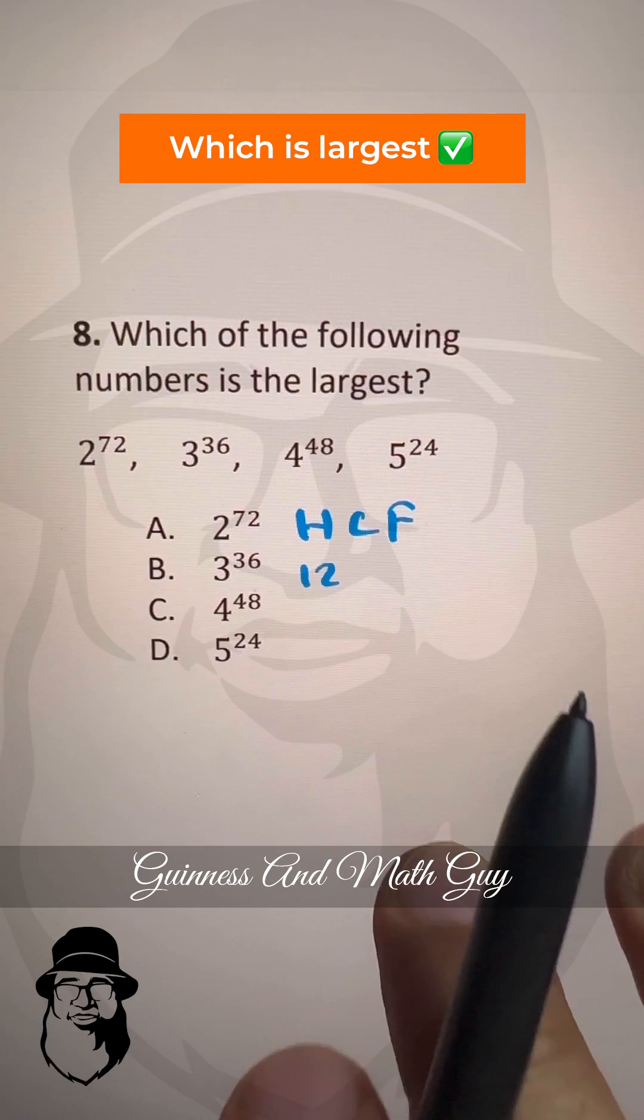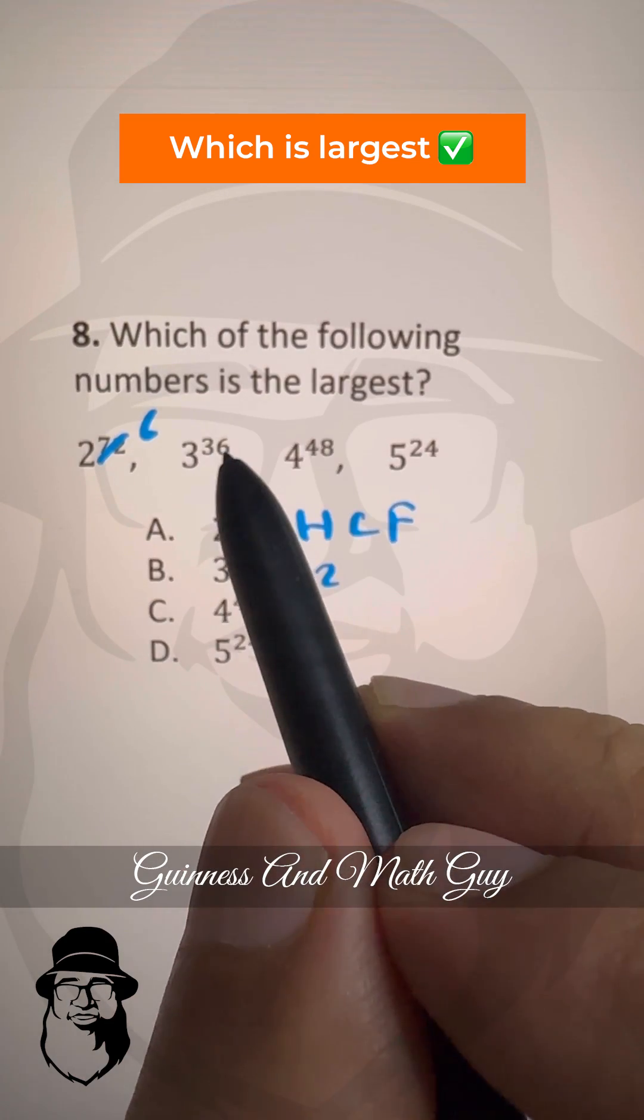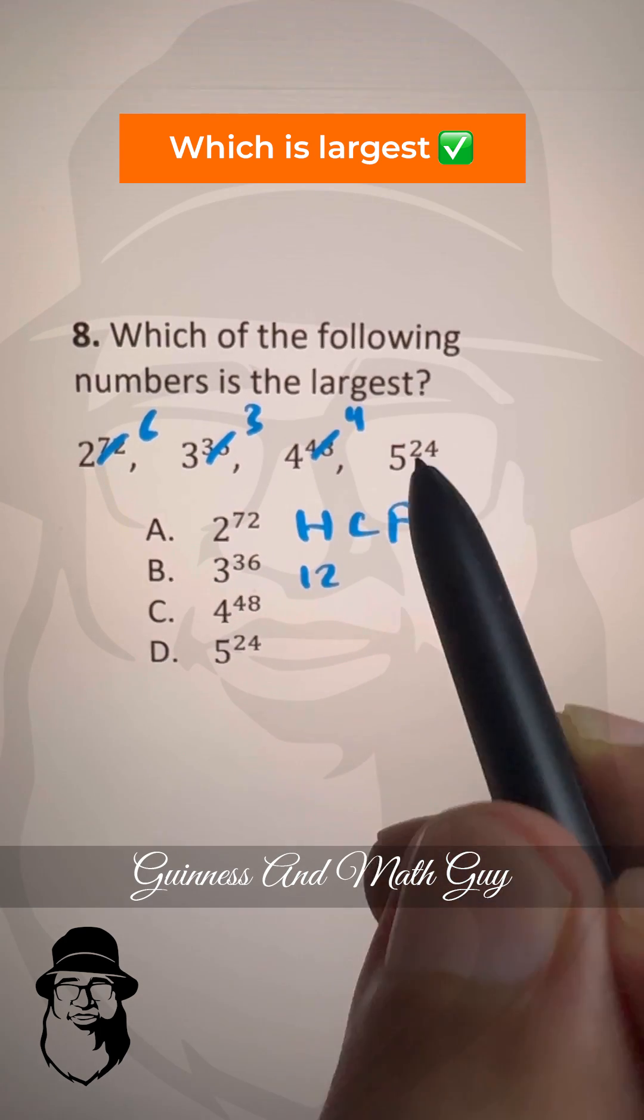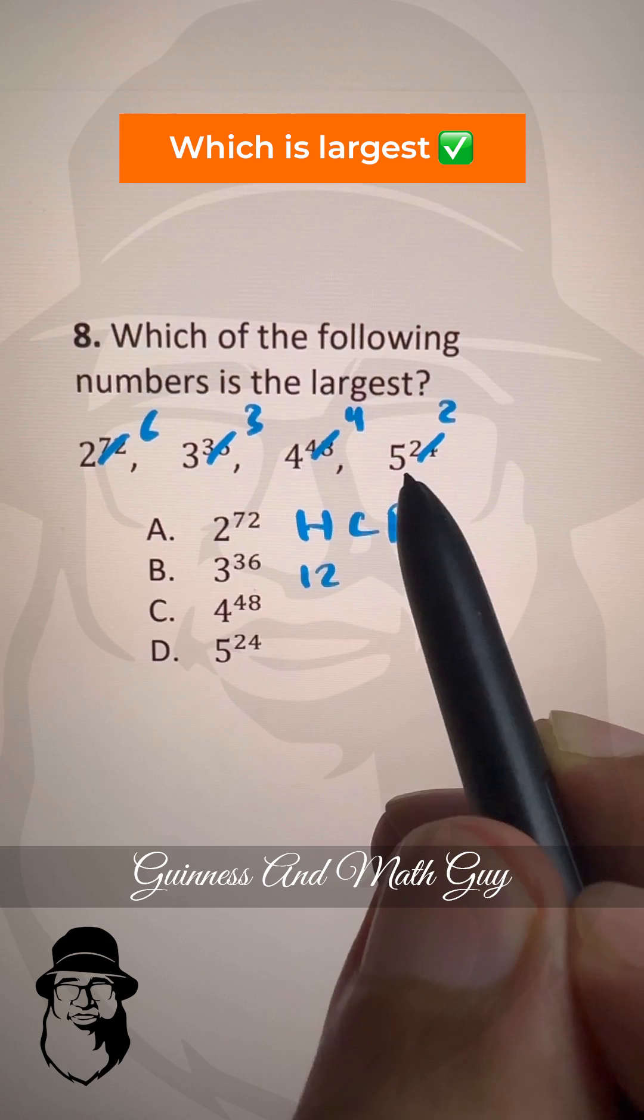12 times 6 is 72, then 12 times 3 is 36, 12 times 4 is 48 and 12 times 2 is 24.